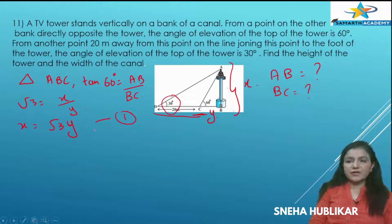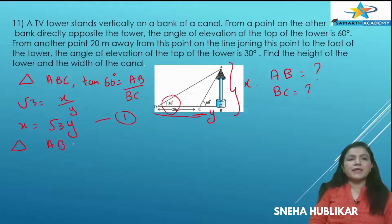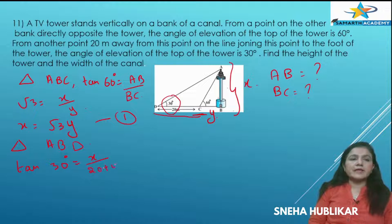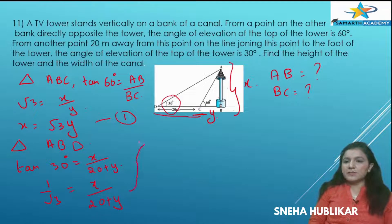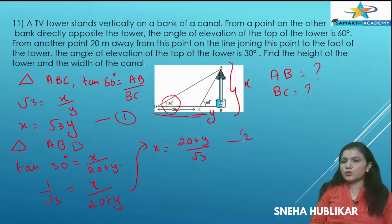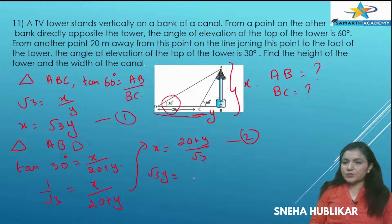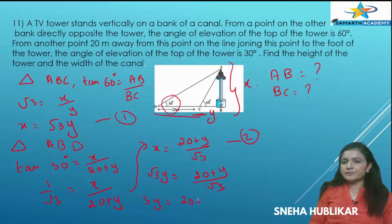Now consider triangle ABD. Tan 30° equals opposite side X by adjacent side (20 plus Y). Tan 30 is 1 by root 3, so 1 by root 3 equals X by (20 plus Y), which implies X equals (20 plus Y) by root 3. Mark this as equation 2. From equations 1 and 2: root 3 Y equals (20 plus Y) by root 3. Cross-multiplying: 3Y equals 20 plus Y, therefore Y equals 10 meters.